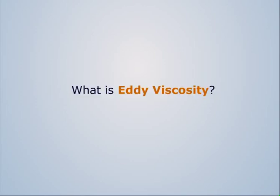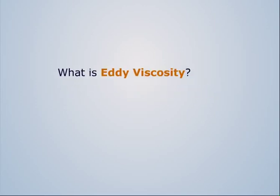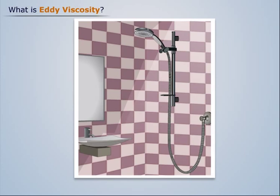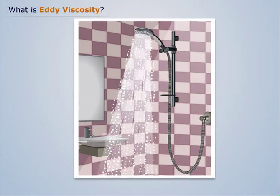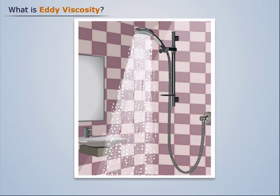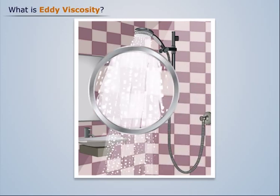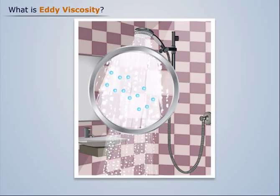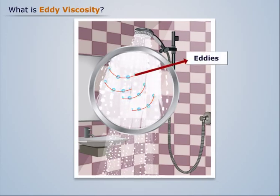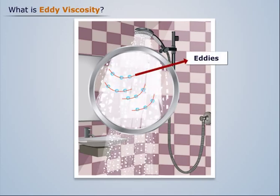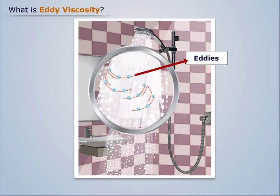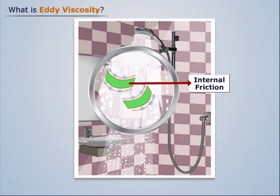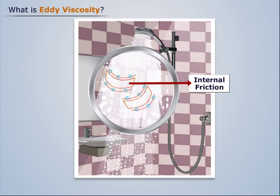What is eddy viscosity? To understand the concept of eddy viscosity, let us consider water falling from a shower. We see that the water particles are moving in a random manner, thus forming eddies. Due to the random movement of water particles, an internal friction develops between them. This internal friction is known as eddy viscosity.